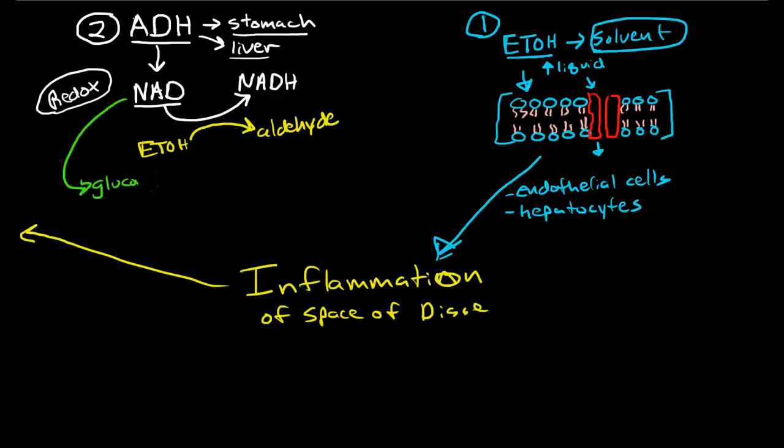So, when we ingest large amounts of alcohol, we end up actually suppressing gluconeogenesis. And this actually causes the liver to increase fatty acid production so that the body still has access to energy substrates.